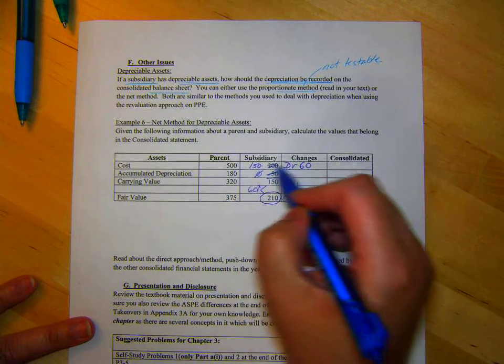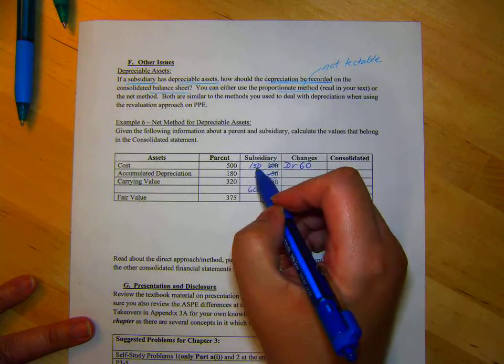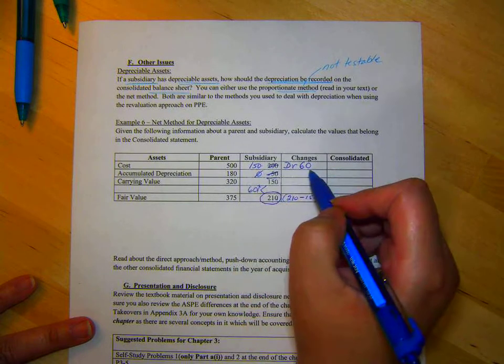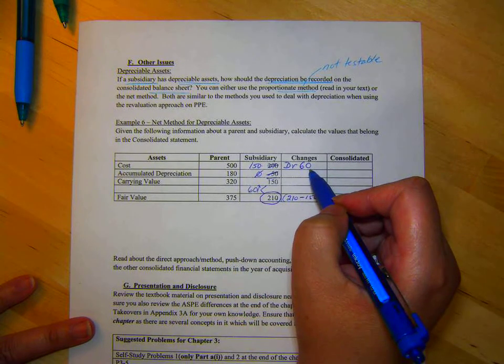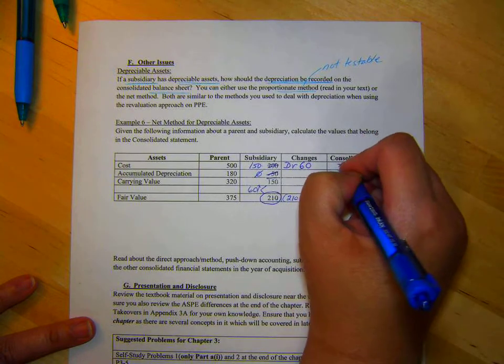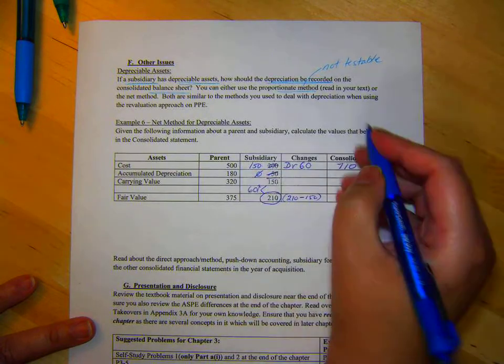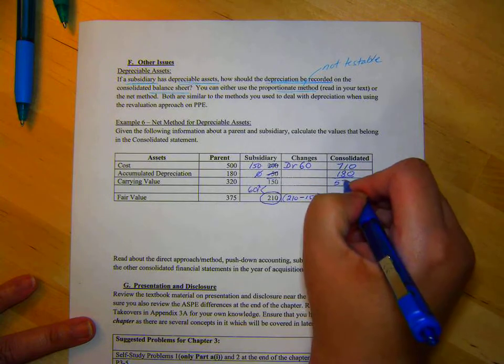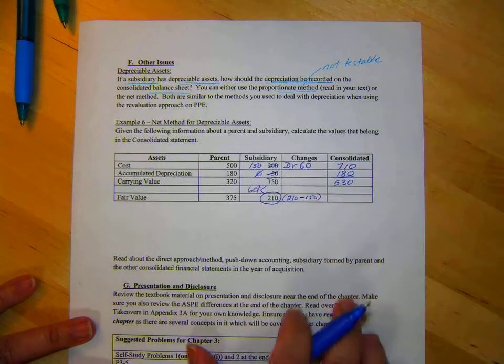Now you can add across. So 500 plus 150, and are we adding or subtracting 60? Adding, so we get 710. Our depreciation is just the 180, and so that gives us 530. And that's it.